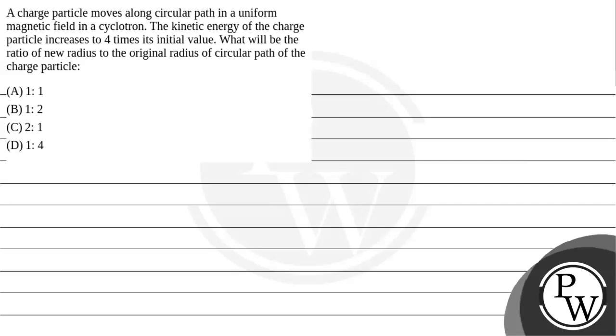Hello Bachchan, let's read the given question. The question states that a charge particle moves along the circular path in a uniform magnetic field in a cyclotron. The kinetic energy of the charged particle increases to 4 times its initial value. What will be the ratio of new radius to the original radius of circular path of charged particle and the options are given below.